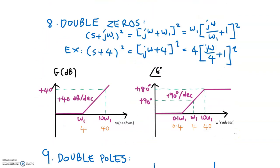Theory number 8 covers double zeros. We have (S plus 4) squared — the same zero at negative 4, but now we have double zeros. We rearrange into the frequency domain by replacing S with J omega, giving (J omega plus 4) squared. We rearrange until we have the standard format. The corner frequency is still 4, but we have double zeros.